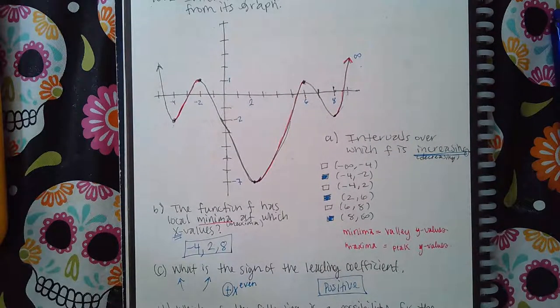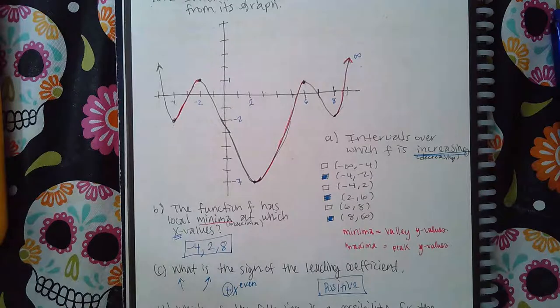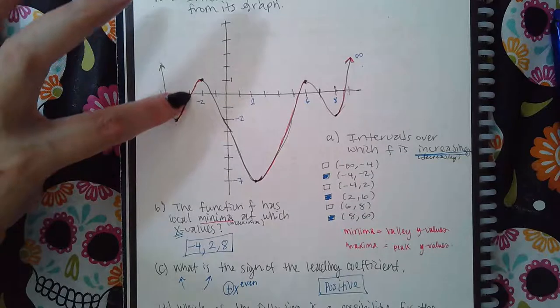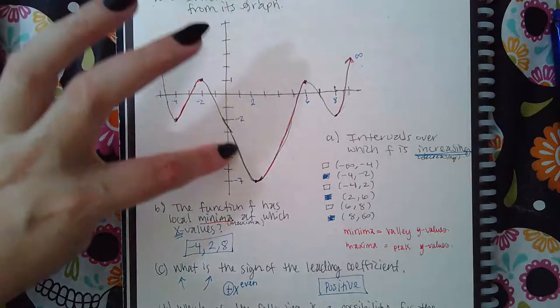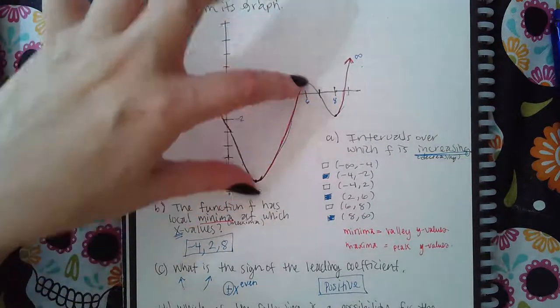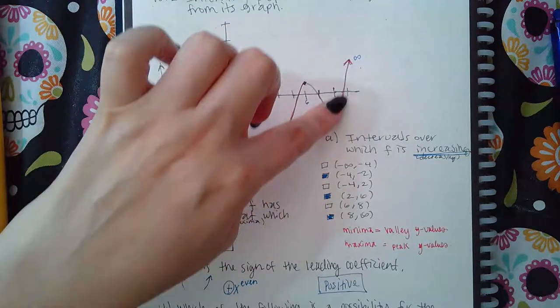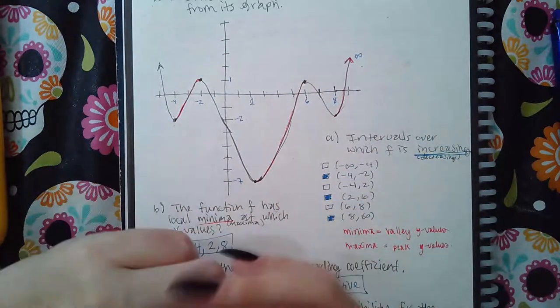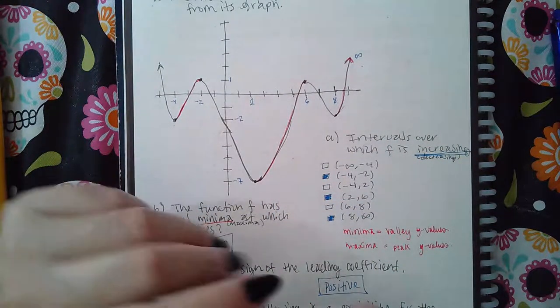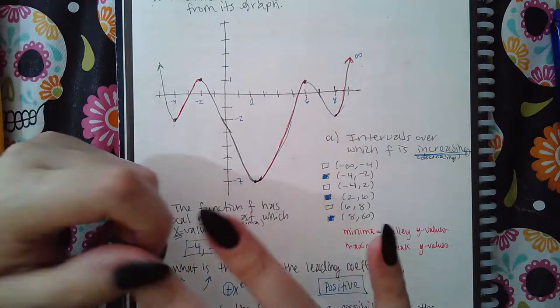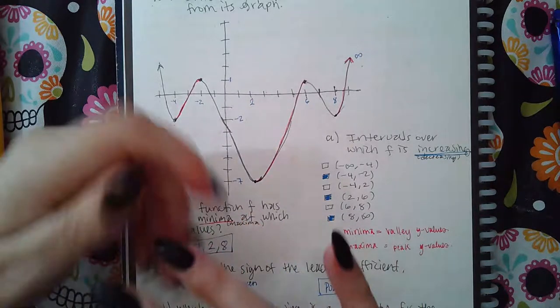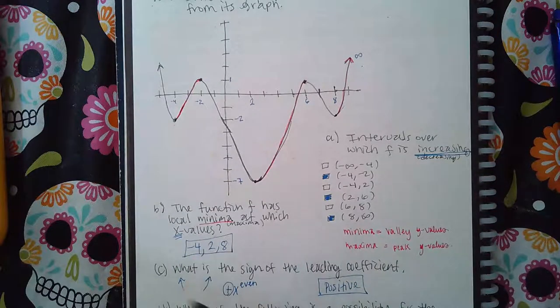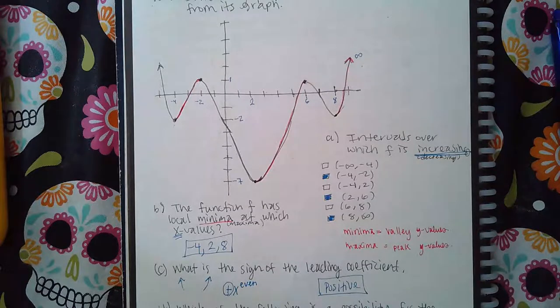What I did was I traced the graph from left to right and then I only colored over the parts in red that were actually increasing. When I traced it, this is going downward, this is going upward so this was increasing, this is going downward, going upward again so this is increasing, going downward and then going upward so this part is increasing. The red parts are the parts of the graph that are increasing. Now in order for me to get the intervals, they only want to know the x-values that correspond to those starting and ending points of the red pieces.